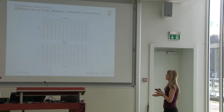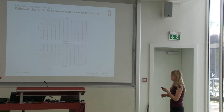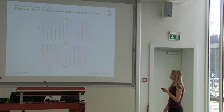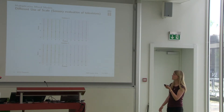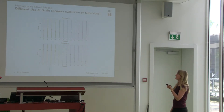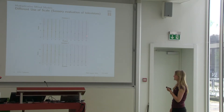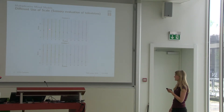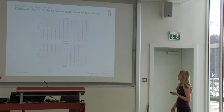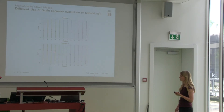I will illustrate this with these plots. Here is a television dataset and I've chosen these two different assessors because they score the products very differently. As you see here, assessor 2 uses a very small part of the scale to distinguish between the products — here are the 12 products, these are the scores, and we have two replicates. And here is assessor 7 that uses a way larger part of the scale to distinguish between these products.